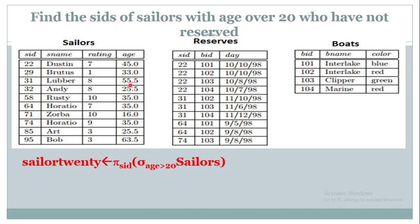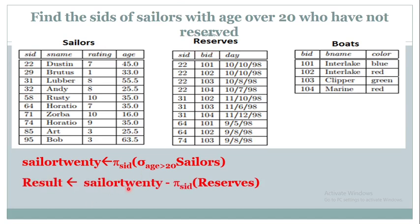From the Sailors table, retrieve those with age greater than 20 using a Sigma operation, and from the four columns just retrieve Sailor ID using Pi SID. The resultant relation is the Sailor IDs with age greater than 20. Then perform a Minus operation: SID of sailors minus SID of reserves. The final resultant relation is the SIDs of sailors with age over 20 who have not reserved any boat.